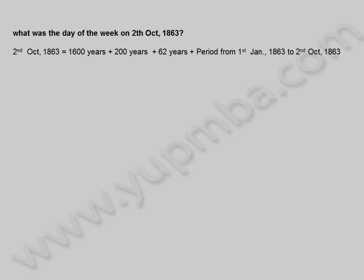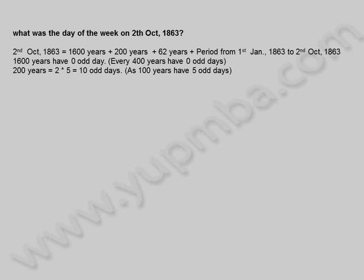What was the day of the week on 2nd October 1863? 2nd October 1863 is equal to 1600 years plus 200 years plus 62 years plus the period from 1st January 1863 to 2nd October 1863. 1600 years have 0 odd days — every 400 years have 0 odd days. 200 years equals 2 into 5 equals 10 odd days, as 100 years have 5 odd days. This equals 7 plus 3 odd days, equaling 3 odd days, since 7 odd days equals 1 week equals 0 odd days.